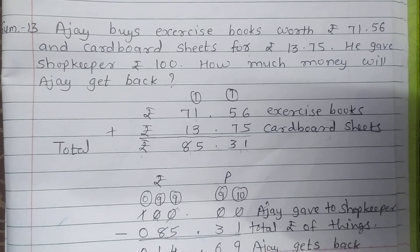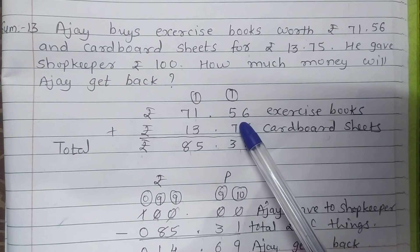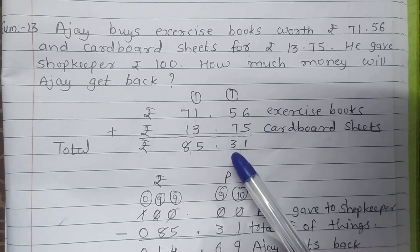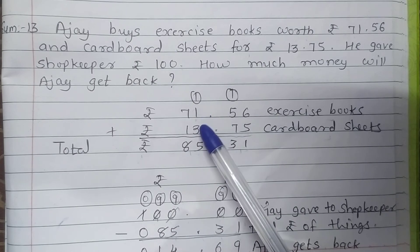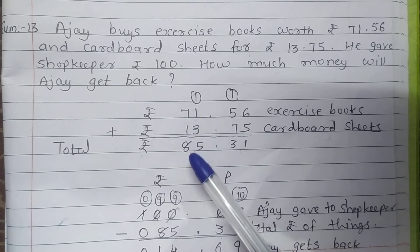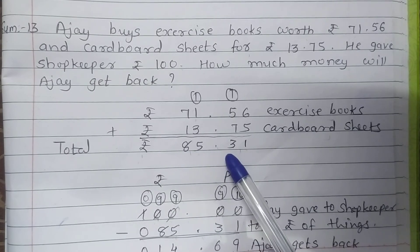6 plus 5 is 11, 1 down and 1 carry. 5 plus 7 is 12, plus 1 is 13, 3 down and 1 carry. 1 plus 1 is 2, 2 plus 3 is 5, and 7 plus 1 is 8. So total expense is 85.31.